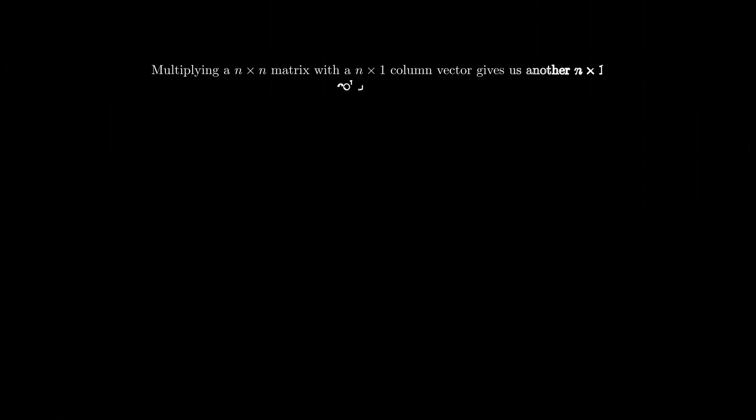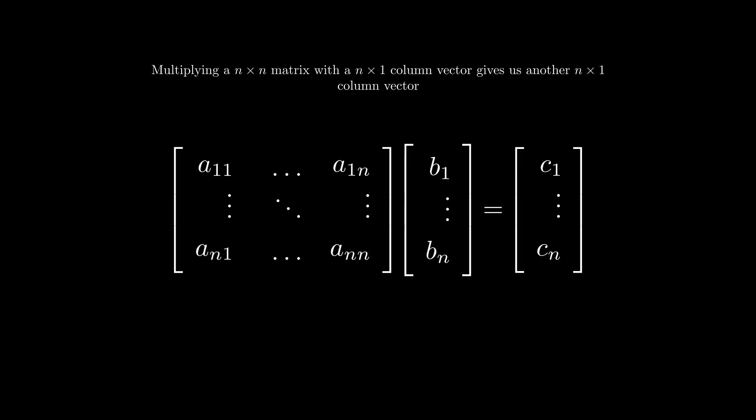It turns out that when we multiply a matrix with a column vector, we get another column vector. Intuitively, what is happening is the column vector is getting transformed by the matrix. So we can use matrices as transformations on a vector.